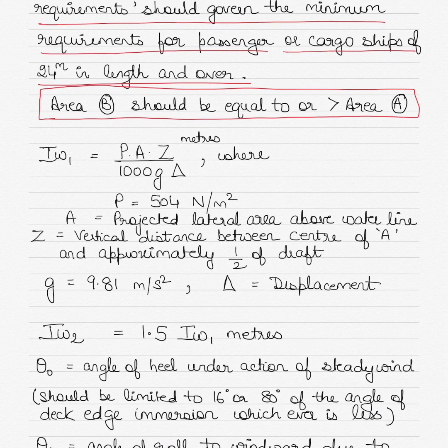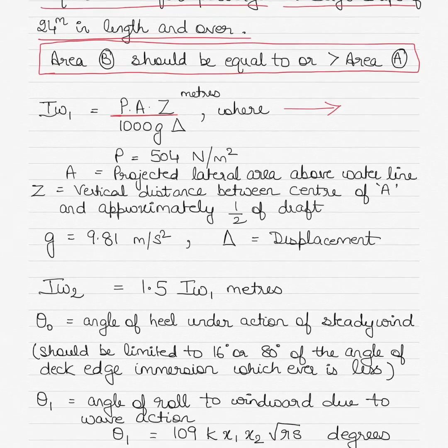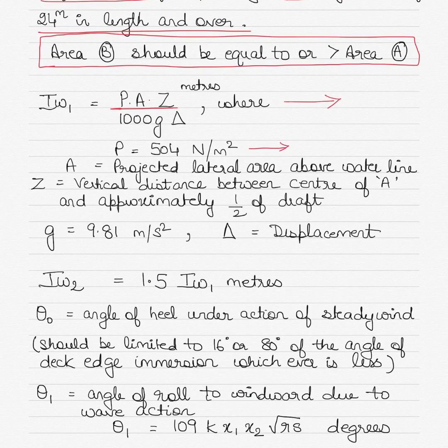Below, the IW1 formula is given. IW1 equals P multiplied by A multiplied by Z divided by 1000 times G times delta. P stands for wind pressure or wind force of 504 Newton per meter square area of the vessel. A stands for the projected lateral area above water line. The area above water line is considered because that is the windage area on which the wind can actually act so that the vessel may heel over on one side.